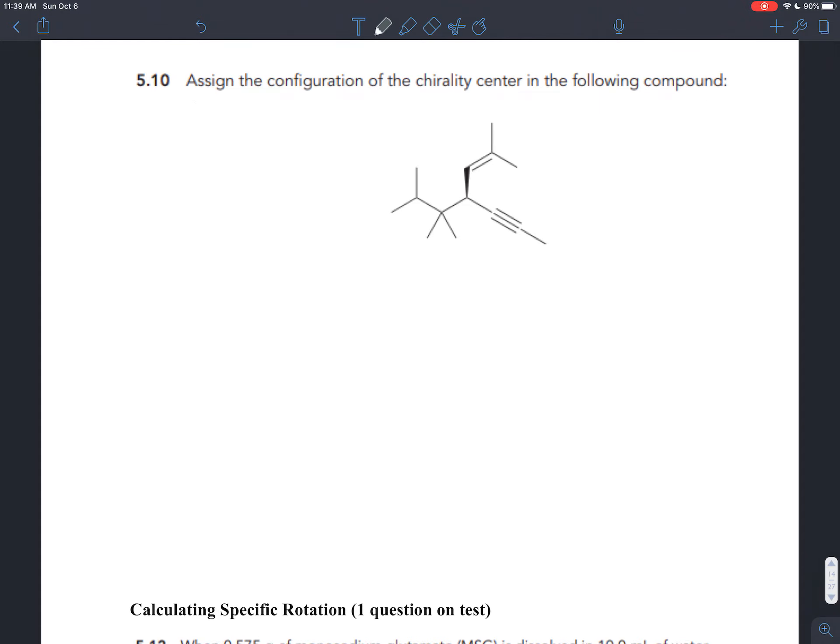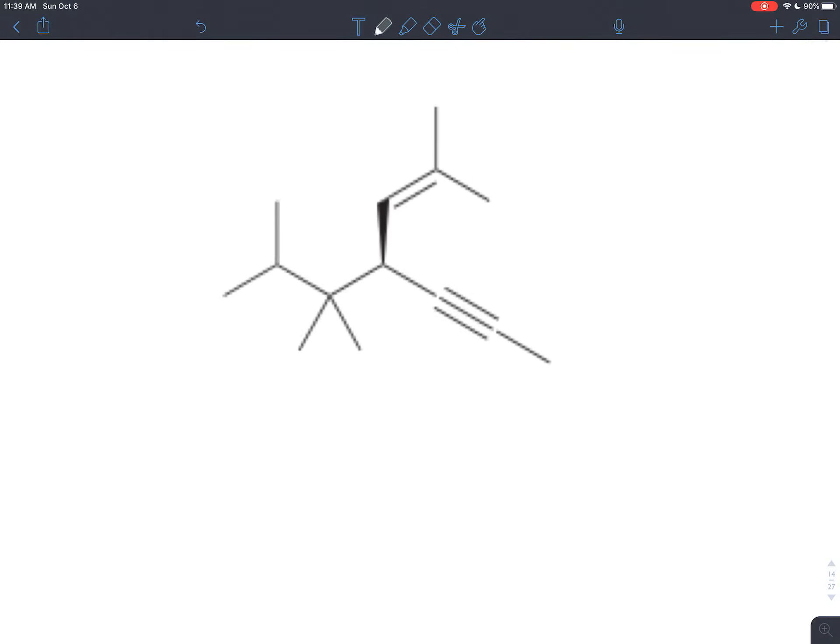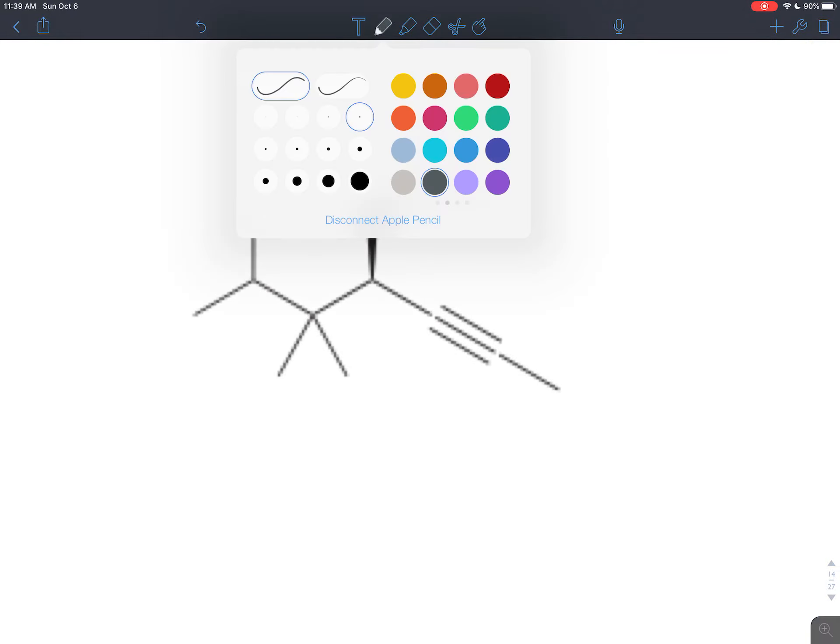Exercise 510 is asking you to assign the configuration of the chirality center in this molecule below. So we're going to use the CIP rules to do that, and the chirality center is the one that has that three-dimensional bond around it, the one that's coming out at us.